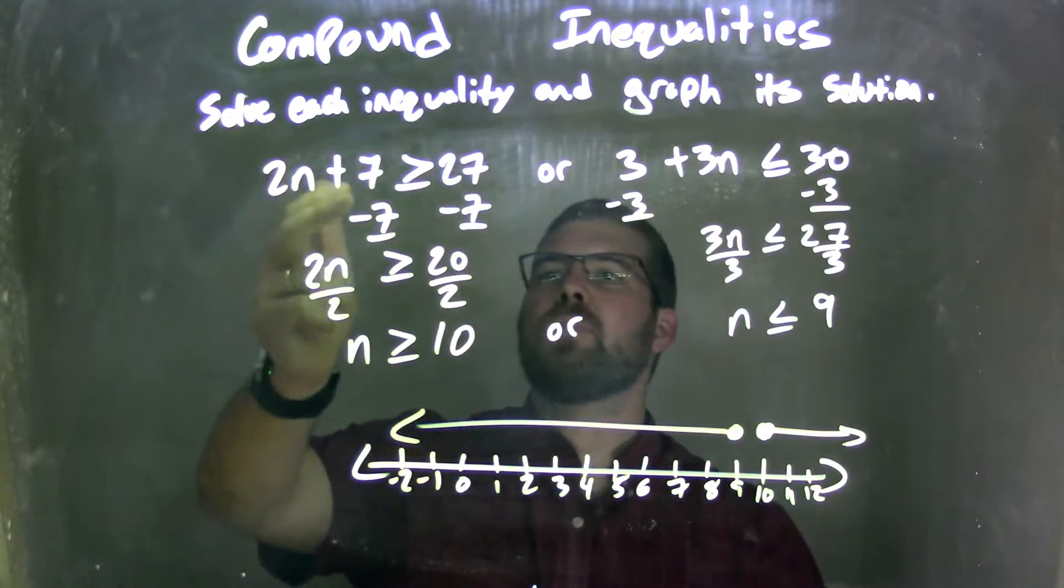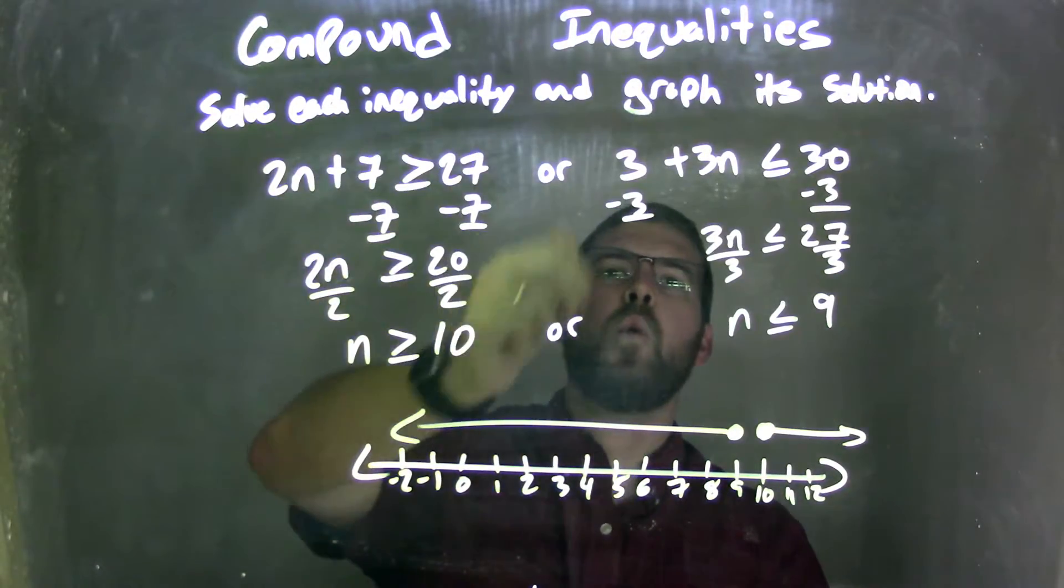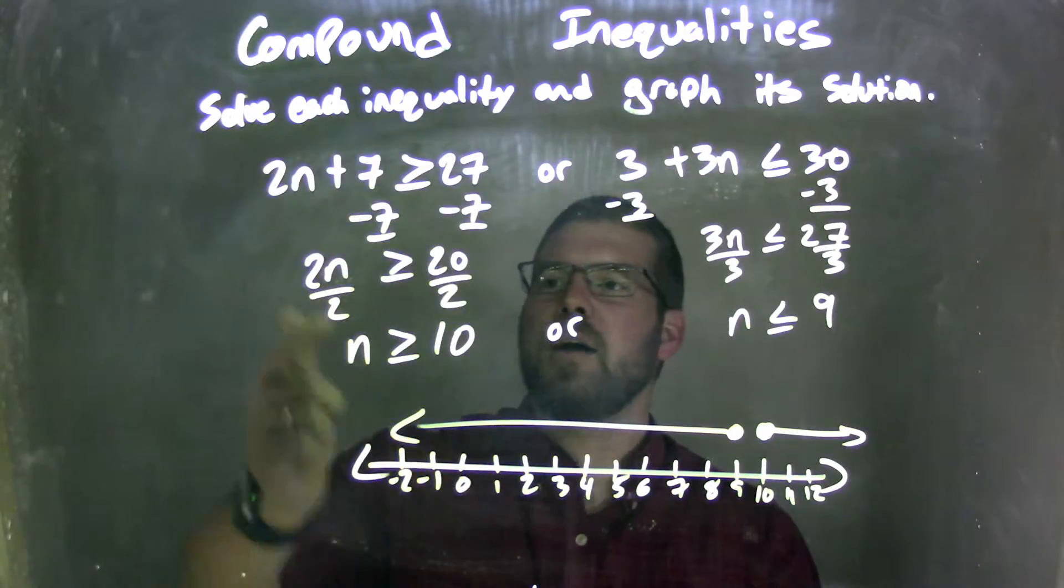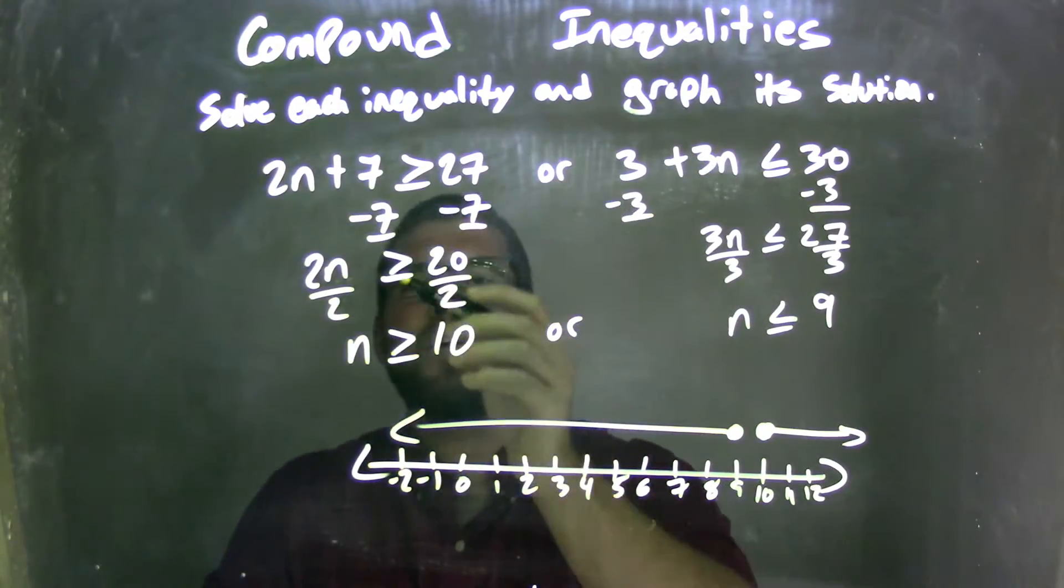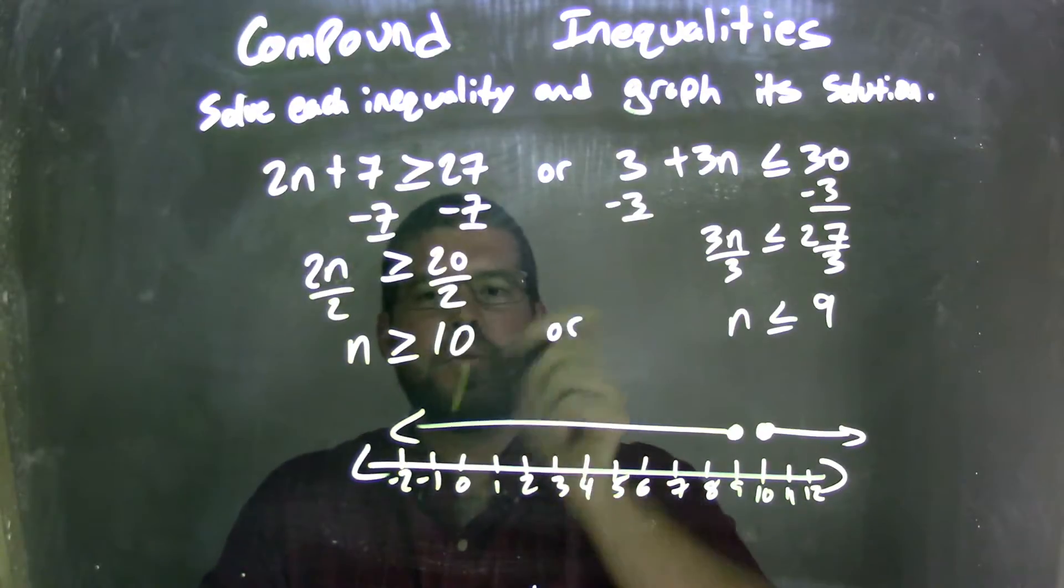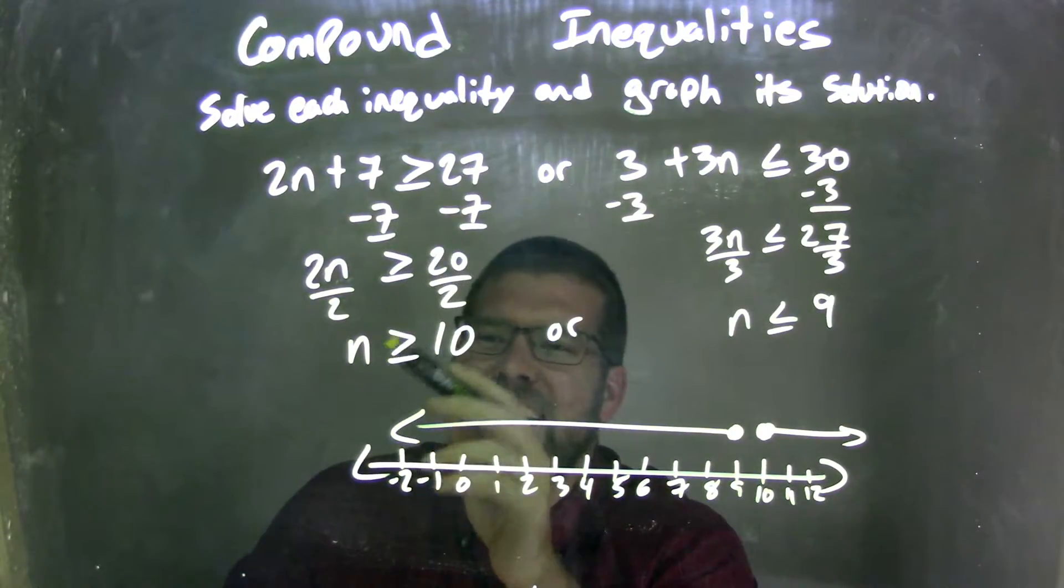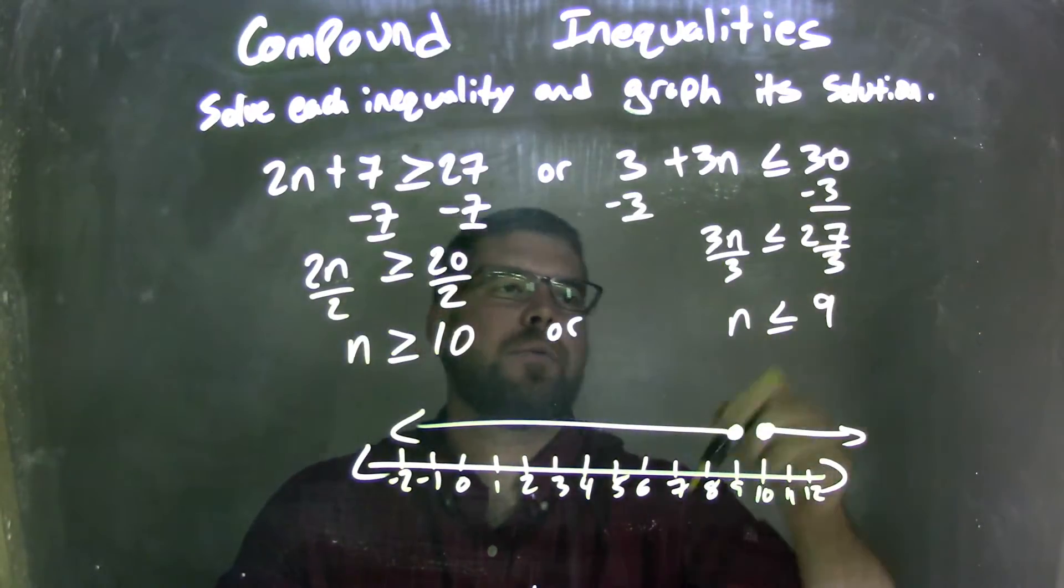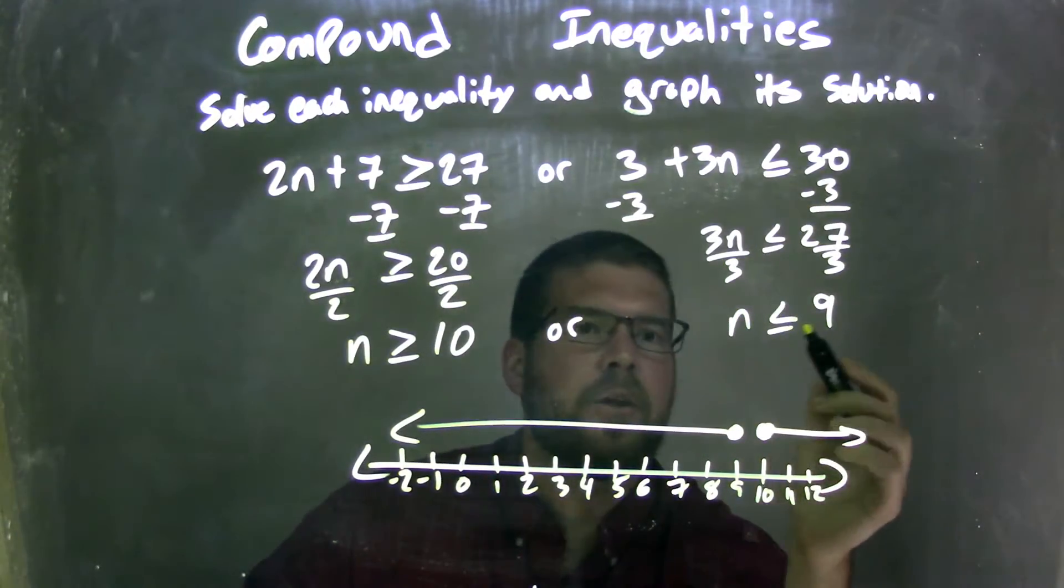We're given our two inequalities. 2n plus 7 is greater than or equal to 27, or 3 plus 3n is less than or equal to 30. I subtract 7 from both sides, giving me 2n by itself on the left is greater than or equal to 20. Divide by 2 on both sides, and I'll have n is greater than or equal to 10. Here, I subtract 3 from both sides, then I divide by 3 on both sides, giving me n is less than or equal to 9.